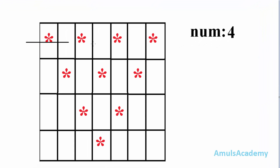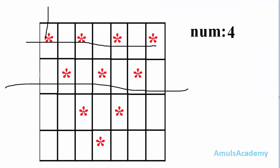Here this is called rows and this is called columns. In the column we can see that in some places we need to print stars and in some places we need to print space.